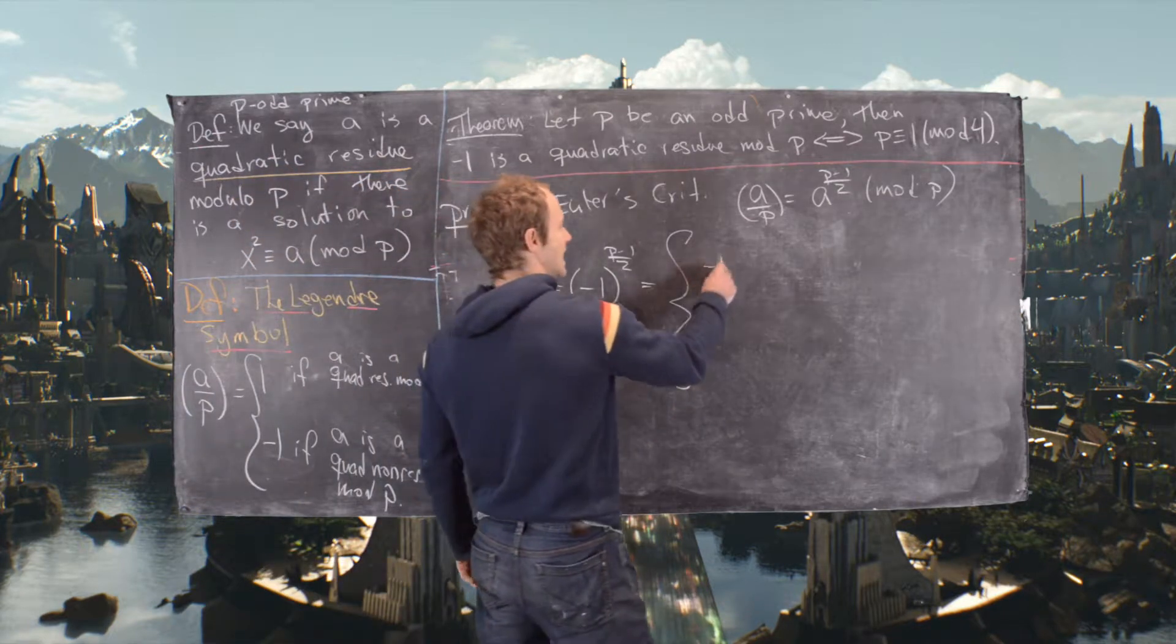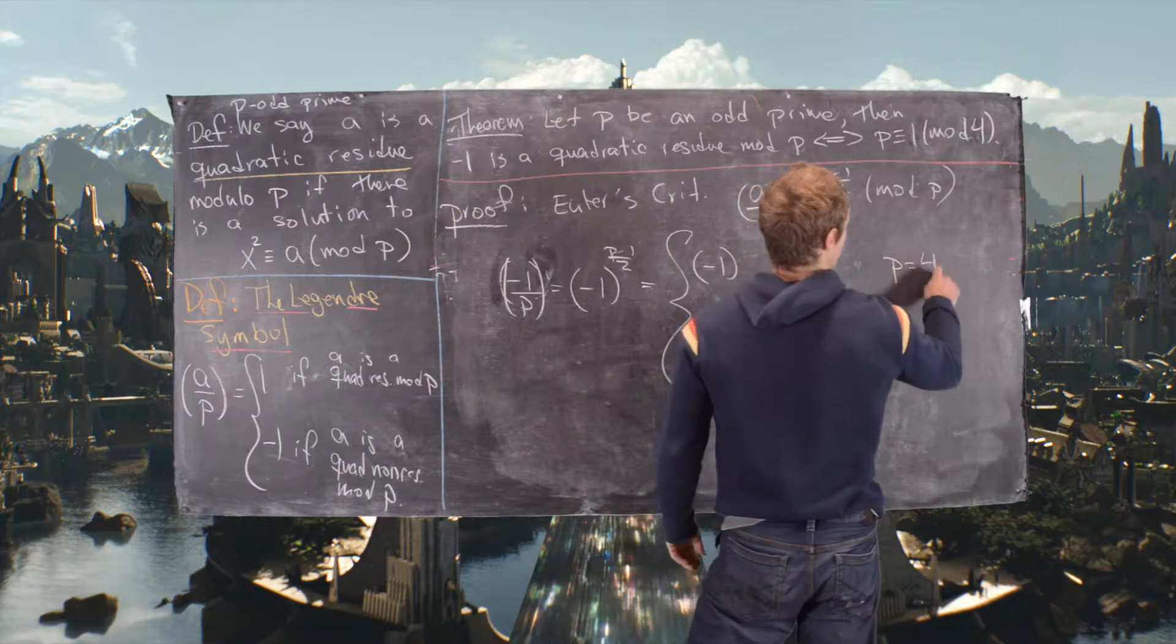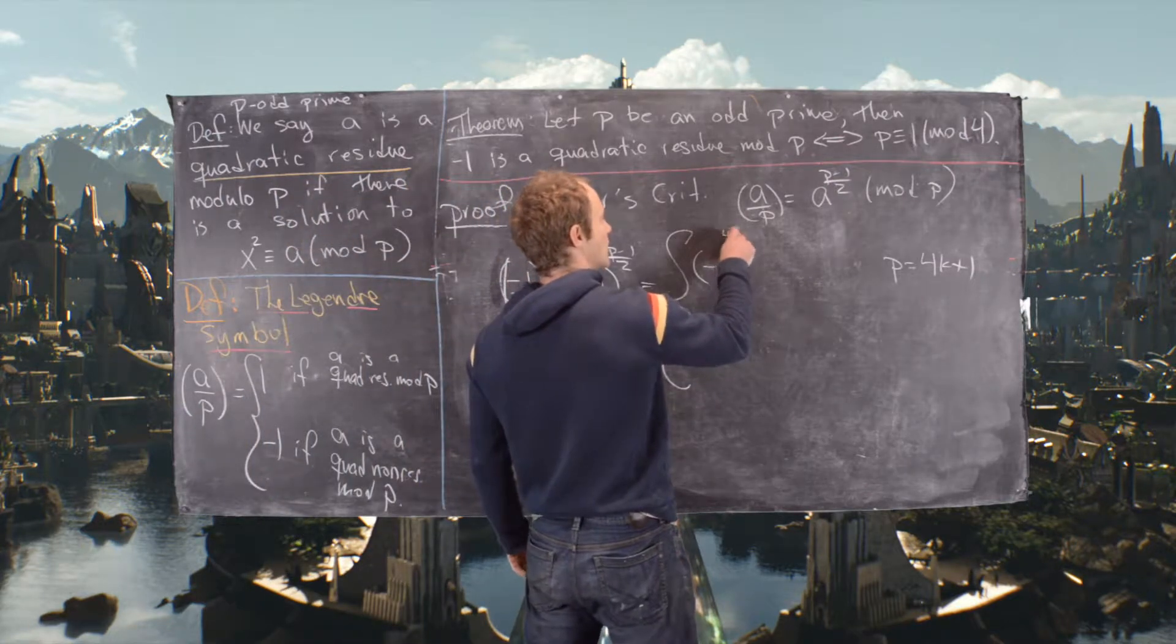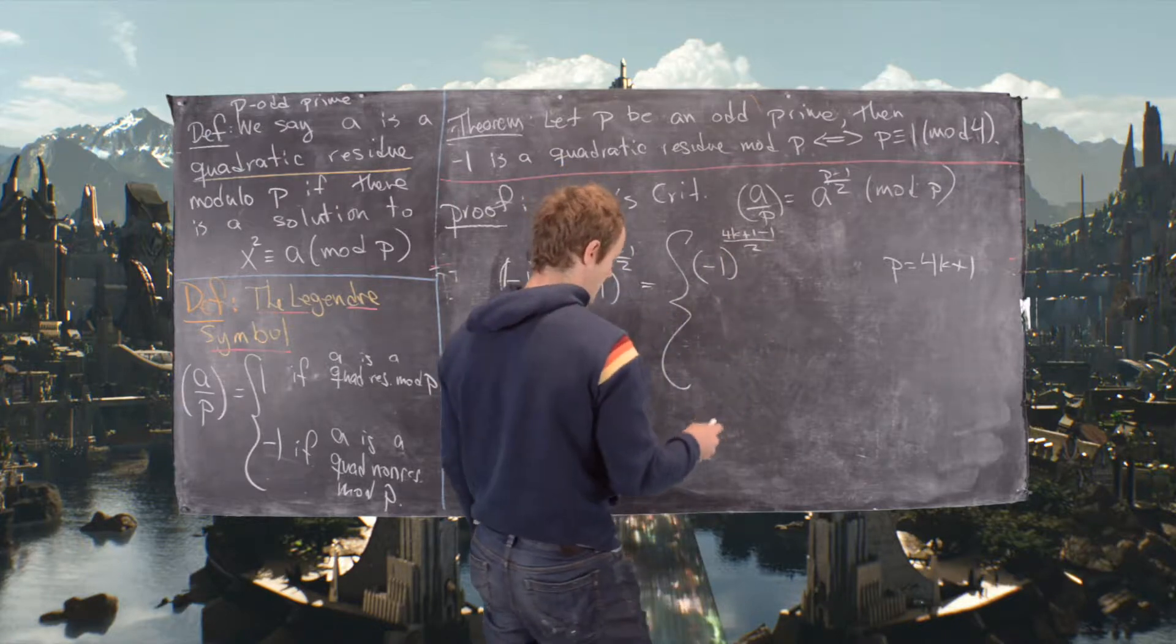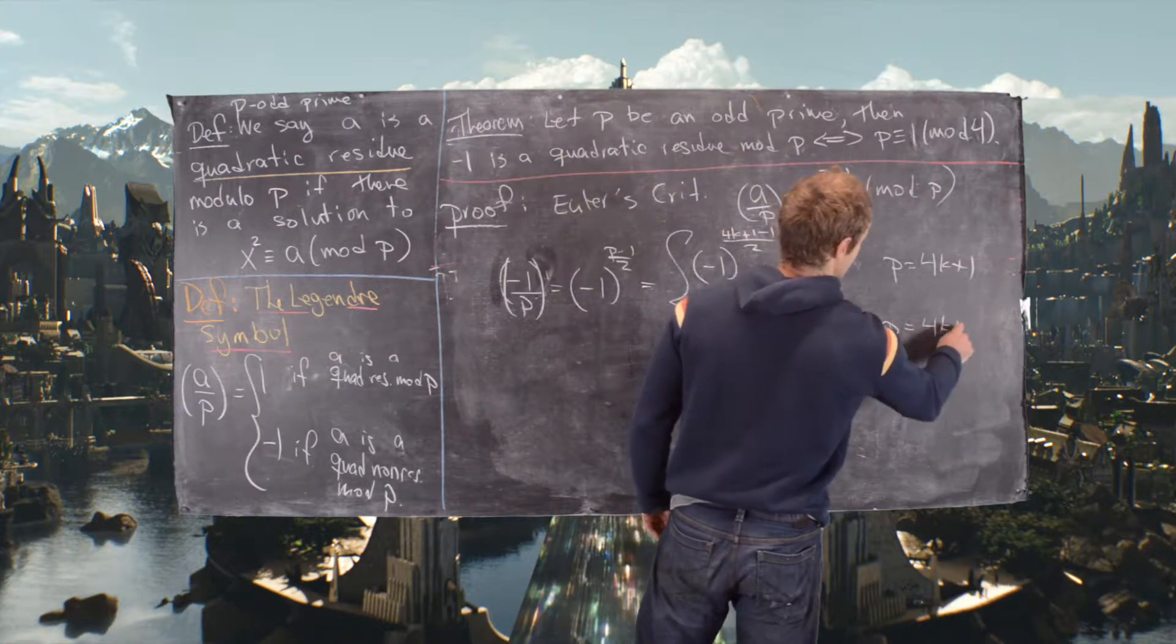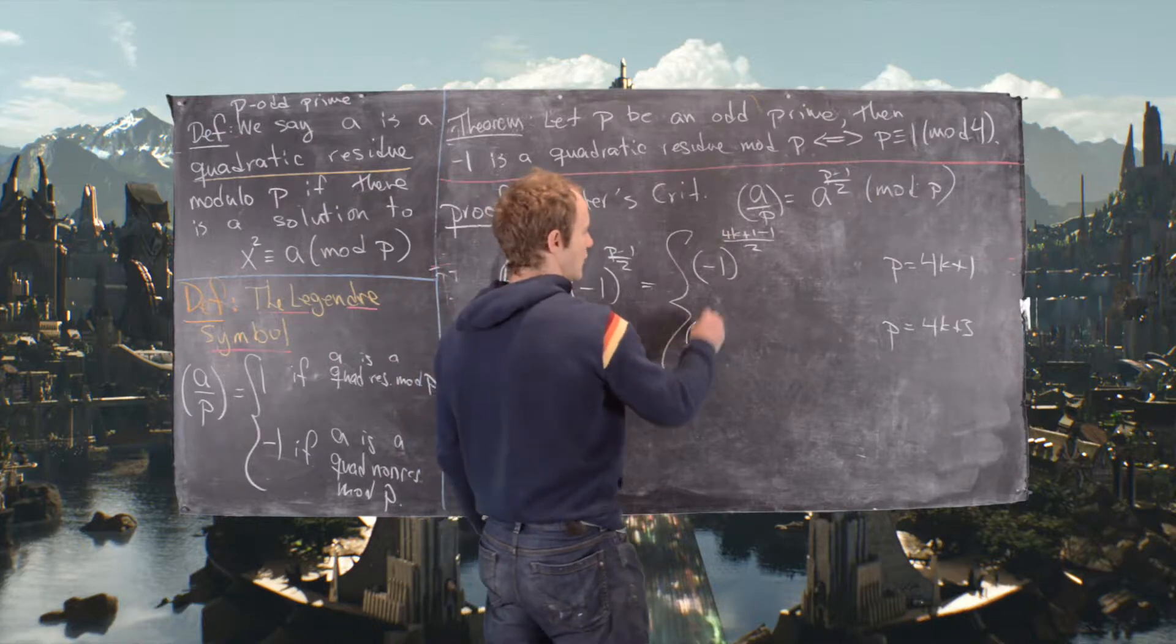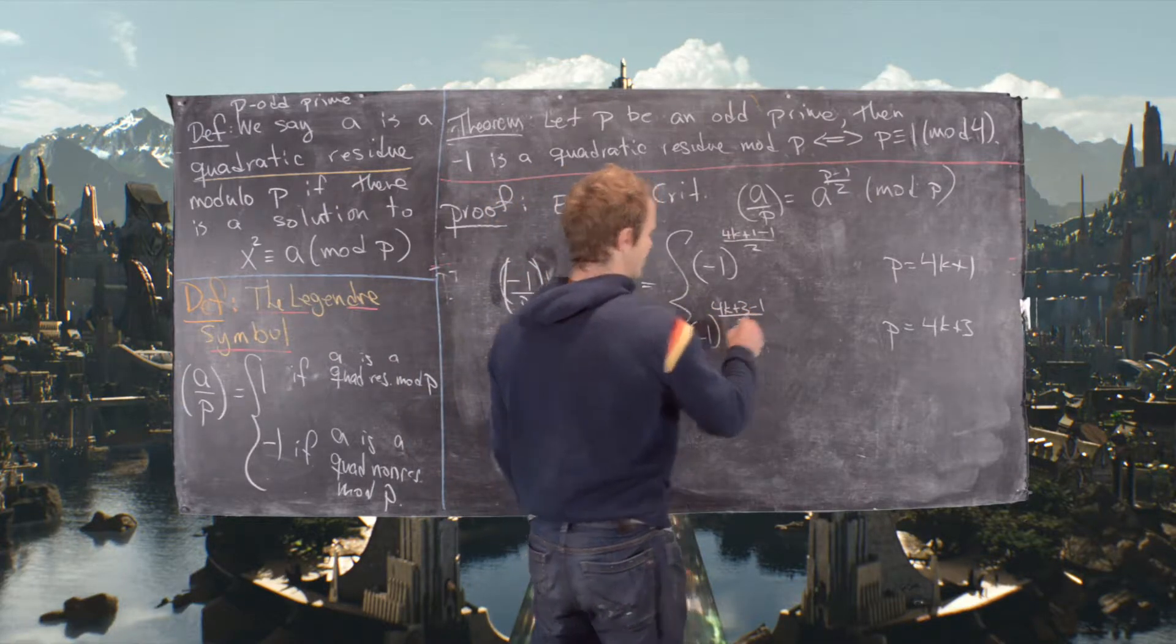Good, but then that's going to split up into two different cases. So that'll be negative 1 and now let's replace p with 4k plus 1, in other words p is congruent to 1 mod 4. So that's going to give us 4k plus 1 minus 1 divided by 2. And down here we'll do the case when p is 4k plus 3. So notice all odd primes have to be of one of those forms. And this is going to be negative 1 to the 4k plus 3 minus 1 divided by 2.